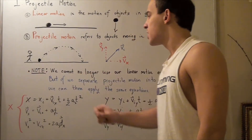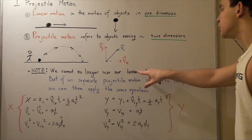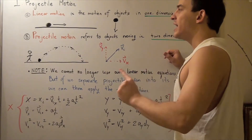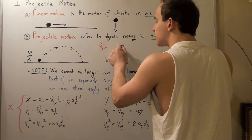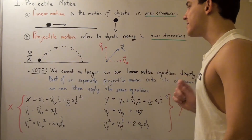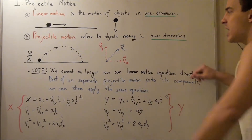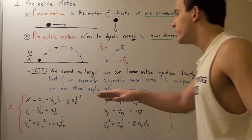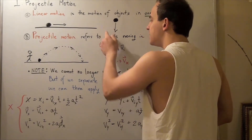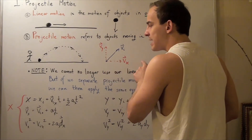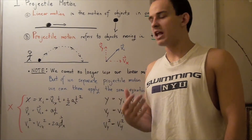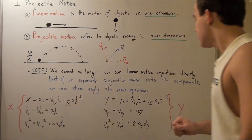Note the following important point: we can no longer use our linear motion equations directly. The equations we derived when we spoke about linear motion — we cannot apply them to this vector here because this vector is not moving in a linear fashion; it follows a parabolic curve. What we can do is separate our projectile motion into its components, the y-component and x-component, and then use our formulas directly. So instead of three equations, we have six — three for the x-direction and three for the y-direction.